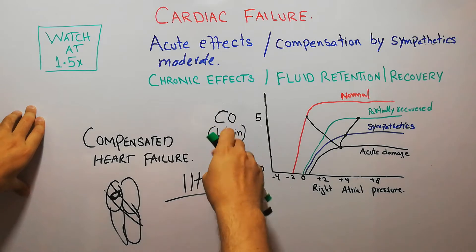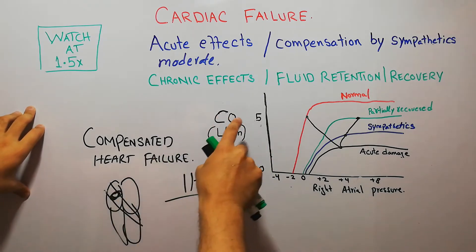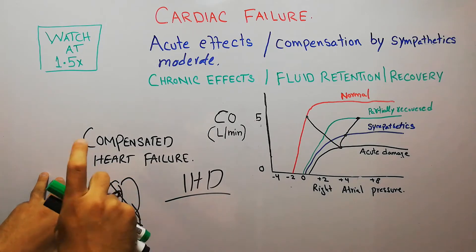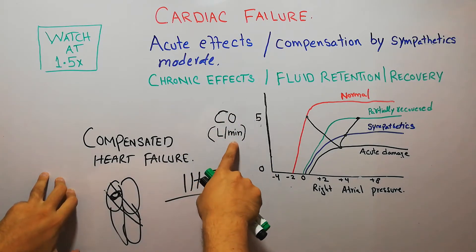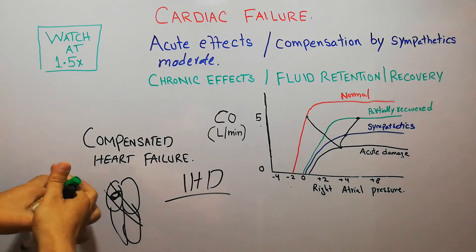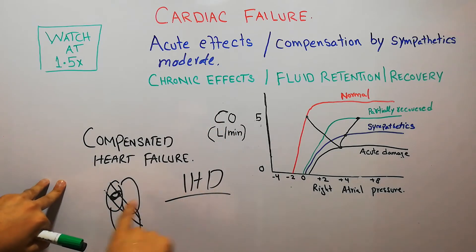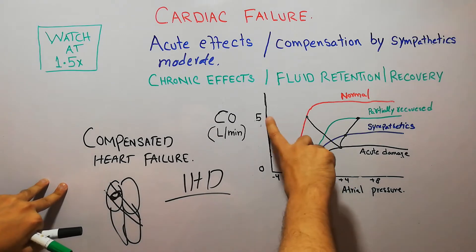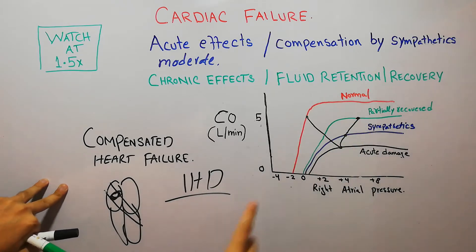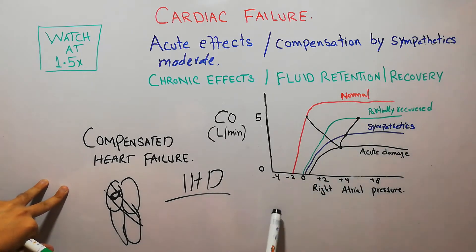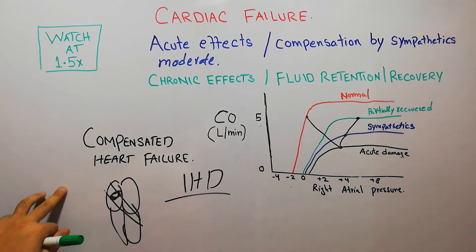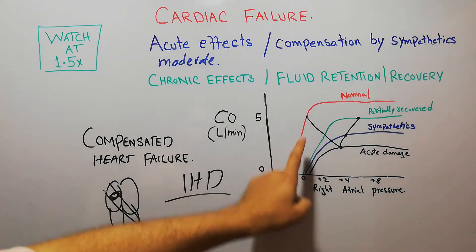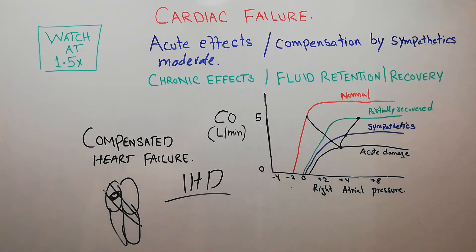In the normal heart, the cardiac output is 5 liters per minute — the normal heart is able to pump 5 liters of blood every minute. The right atrial pressure, the pressure at the right atrium, is 0 millimeters of mercury at this 5 liters per minute. This red curve on the graph represents the normal heart showing cardiac output of 5 liters per minute and right atrial pressure of 0 mmHg.